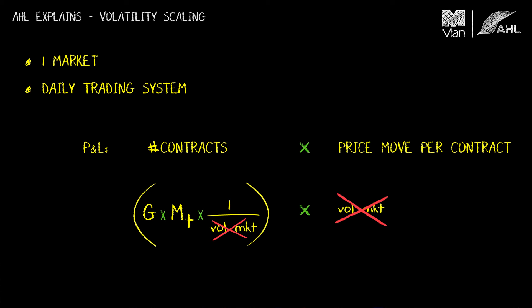Volatility forecasting is important for what we do, but it's not where profits come from. Profit in this type of trading system comes from a well-designed momentum signal that coincides in its positive and negative values with whether the market subsequently goes up or goes down. Volatility forecasting is important for making sure you're able to appropriately scale your positions and take the appropriate amount of risk through time.